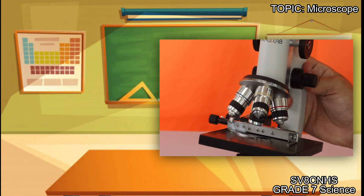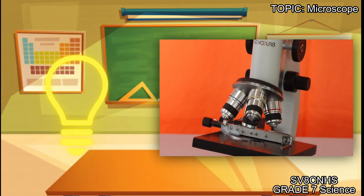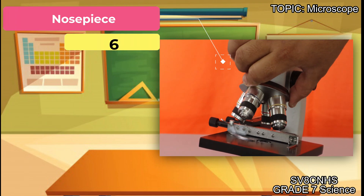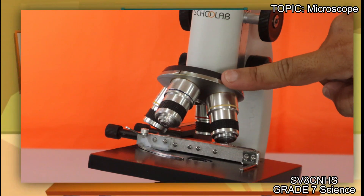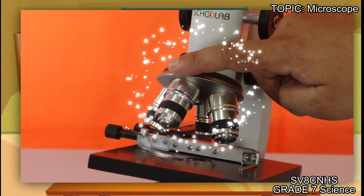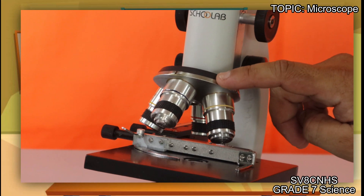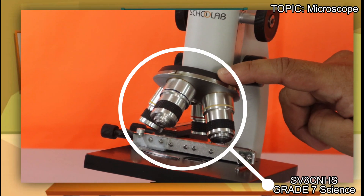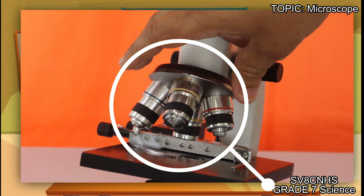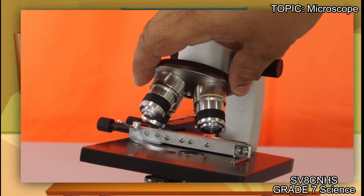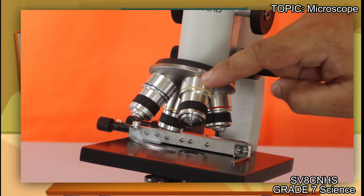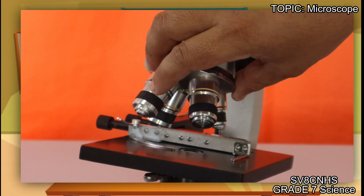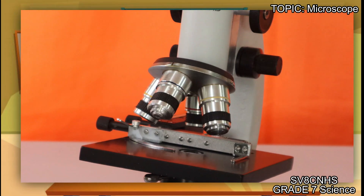We will now proceed to the last part of our compound microscope. The last part is what we call the nosepiece. Here is our nosepiece. What is the function of the nosepiece? It holds the low-power and high-power objective lenses. It also allows the lenses to rotate for viewing, so it allows our objective lenses to rotate and holds them in place.